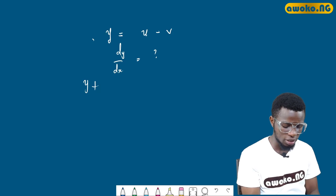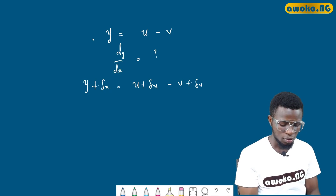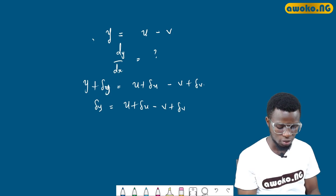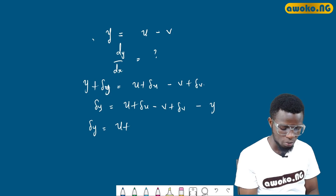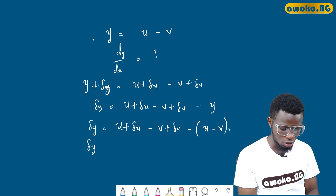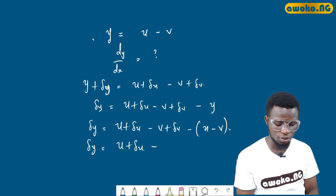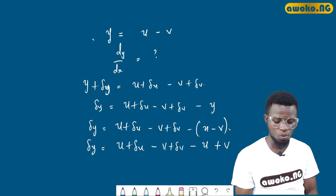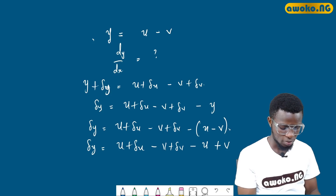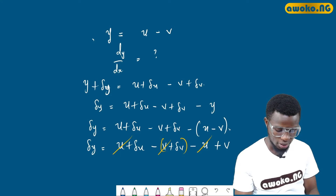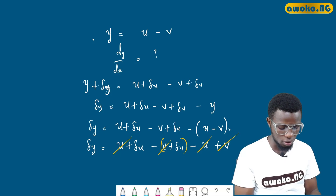Looking for the small infinitesimal changes, y plus Δy equals u plus Δu minus v plus Δv. So Δy equals u plus Δu minus v plus Δv minus y, which is u minus v. This gives us Δy equals u plus Δu minus v plus Δv minus u plus v. Cancelling out the u and v terms, we are left with Δy equal to Δu minus Δv.